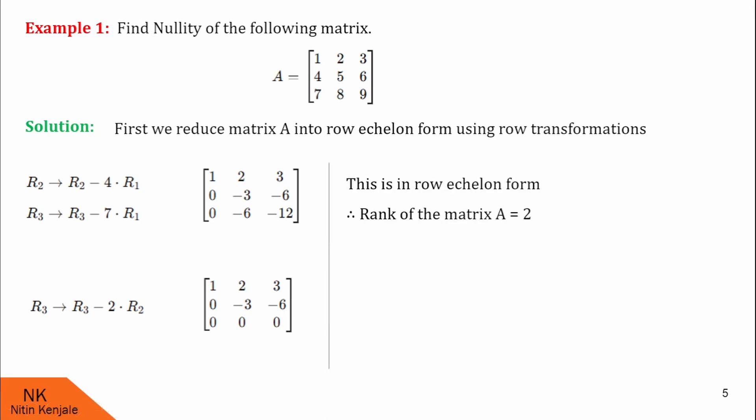Finally, we calculate the nullity by subtracting rank from the number of columns. Therefore, nullity of the given matrix A is 3 minus 2 is equal to 1. I hope guys you understood this solution.